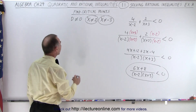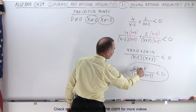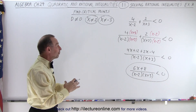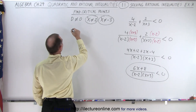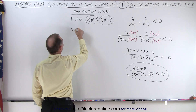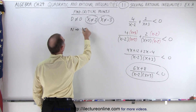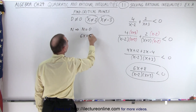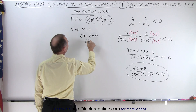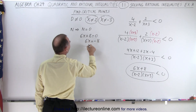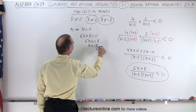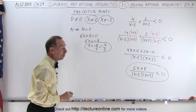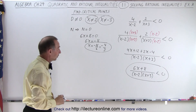Now in the numerator, what we do is set the numerator equal to 0, because when the numerator is 0 the whole fraction equals 0. So we take the numerator and set it equal to 0: 6x plus 8 equals 0, giving us 6x equals negative 8, or x equals negative 8 over 6, which simplifies to negative 4 over 3. And there is our third critical point.